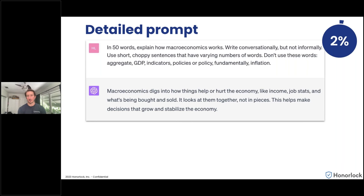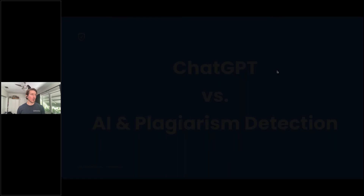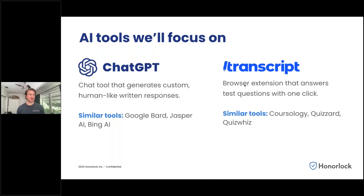Question: does this apply mostly to essay or open-ended type exams, or does it apply to multiple choice? I focused primarily on the ChatGPT side with the tips. But thinking back to the beginning where we talked about different versions of these tools — the cheating extensions like Transcript are pure answer-generating applications. For a multiple-choice assessment, Transcript will tell the student the likelihood that A is the right answer. Coursology, Quizzard, QuizWiz are similar tools that overlay right on top of your assessment.